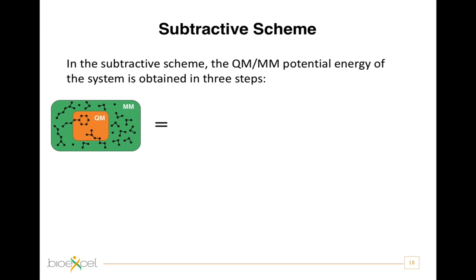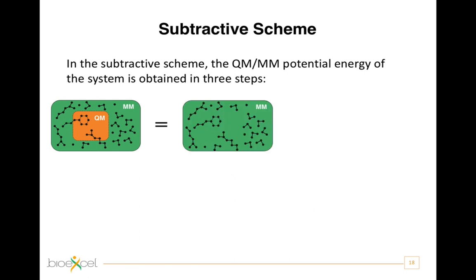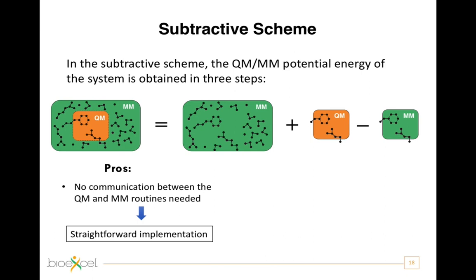In the subtractive scheme, the potential energy of the QM/MM system is obtained in three steps by performing three independent calculations. First, the energy of the total system is evaluated at the MM level, for example at force field level. Then, the energy of just the isolated quantum subsystem is calculated at quantum level and added to the previous result. Finally, the MM energy of the quantum subsystem is subtracted, to avoid counting twice the interactions within the quantum subsystem. The main advantage of this QM/MM coupling scheme is that no communication is required between the quantum mechanical and the classical routines, making the implementation relatively straightforward.